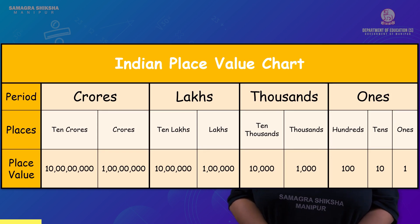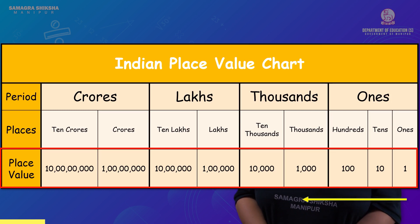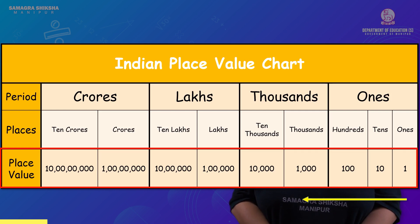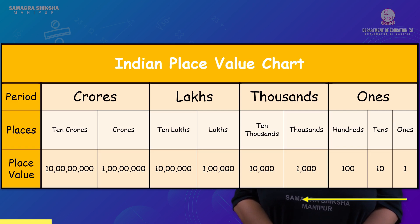Ten crore and one crore. Now place value here: ones place is 1, tens place is 0, hundreds is 0, thousands is 0, ten-thousands is 0, one lakh is 0, ten lakhs is 0, one crore is 0, and ten crore is 0. That's the Indian place value chart.